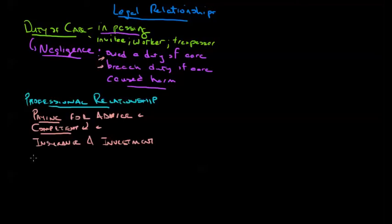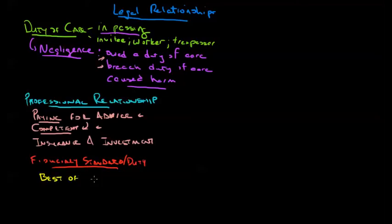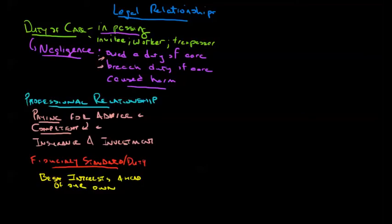We then have the highest standard of care that might be owed, which is a fiduciary standard or fiduciary duty. In a fiduciary relationship, we have to put the best interests of the other party ahead of our own. This is a very rigid standard. There are actually not that many relationships under Canadian common law that fall into this realm. We also have to establish what's called a special relationship of trust — we have to prove that this special relationship of trust existed.